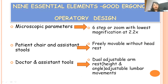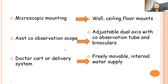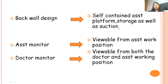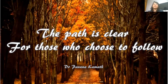The nine essential elements for a good ergonomic operatory design include: a good, fully loaded microscope; a patient chair with freely movable headrest or memory foam; doctor and assistant stools with dual adjustable armrests; microscope mounting that favors good working ergonomics; assistant co-observation scope, preferably binocular; doctor cart or delivery system that is freely movable with water supply; a self-contained back wall design easily reachable for the assistant along with suction; the assistant monitor easily viewable from the assistant's position; and the doctor's monitor easily viewable for both the doctor and the assistant. The science of ergonomics has advanced so much in dentistry that the path is very clear for those who choose to follow. Thank you very much for your attention — I hope all of you will incorporate ergonomics in your practice.